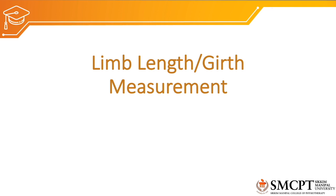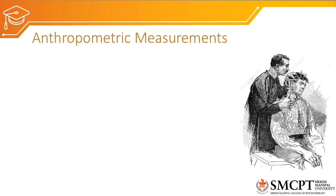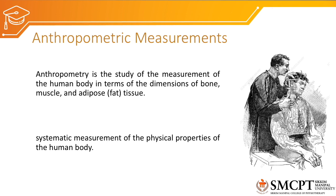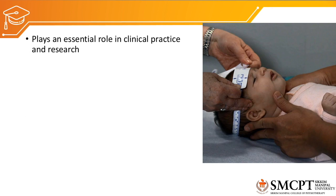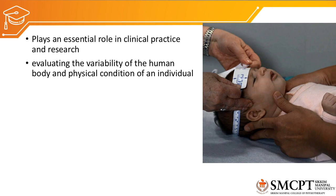So what is anthropometric measurement? Anthropometric measurement is the study of measurement of the human body in terms of the dimensions of bone, muscles, and adipose tissue. It is a systematic measurement of the physical properties of the human body where we take data of the length and breadth of body parts and record it for clinical practices as well as for research. It plays an essential role in clinical practice and research where we evaluate and record the variables of the human body and physical conditions of each individual or patient.